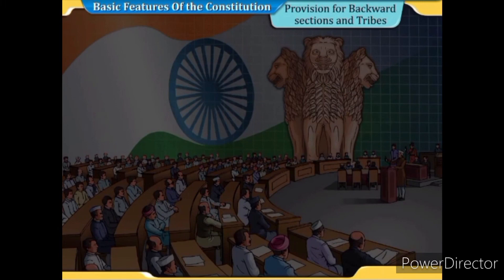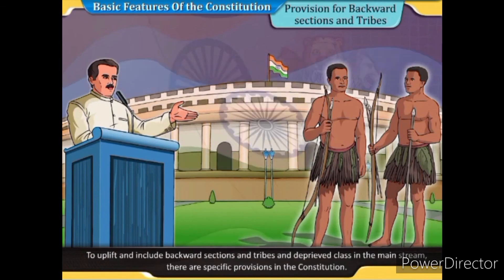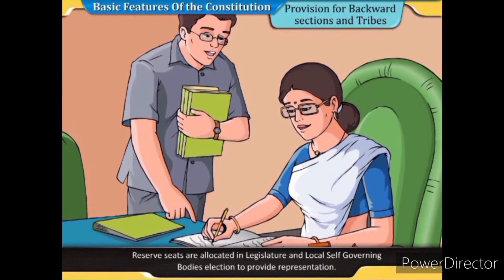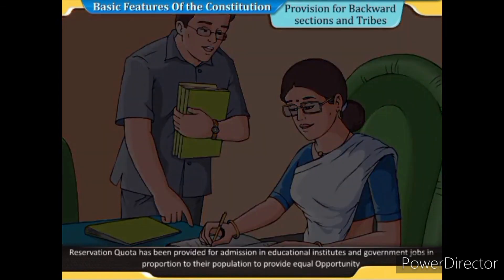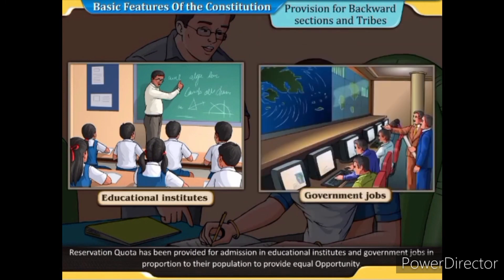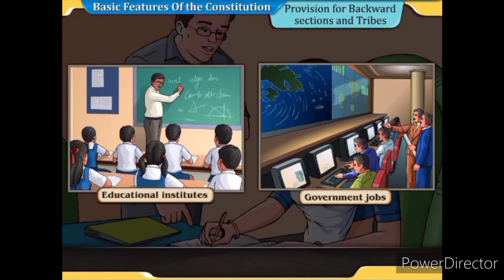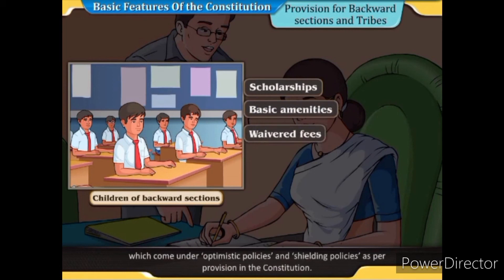There are specific provisions in the Constitution to uplift backward sections and tribes into the mainstream. Reserved seats are allocated in legislatures and local self-governing bodies to provide representation. A reservation quota has been provided for admission in educational institutes and government jobs in proportion to their population to ensure equal opportunity. Children of backward sections and tribes are given scholarships, basic amenities, and waived fees, which come under the protective and shielding policies as per the Constitution.